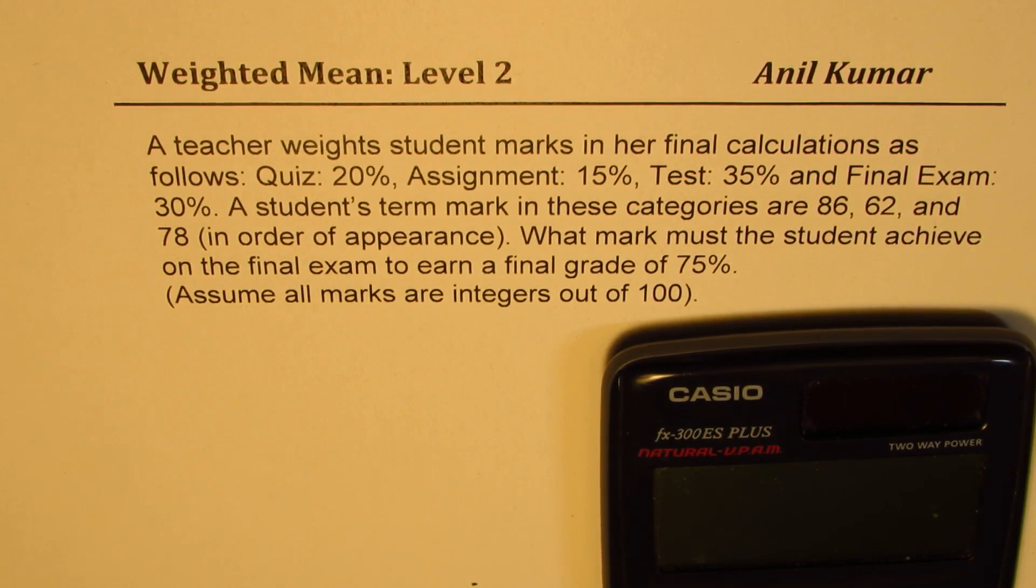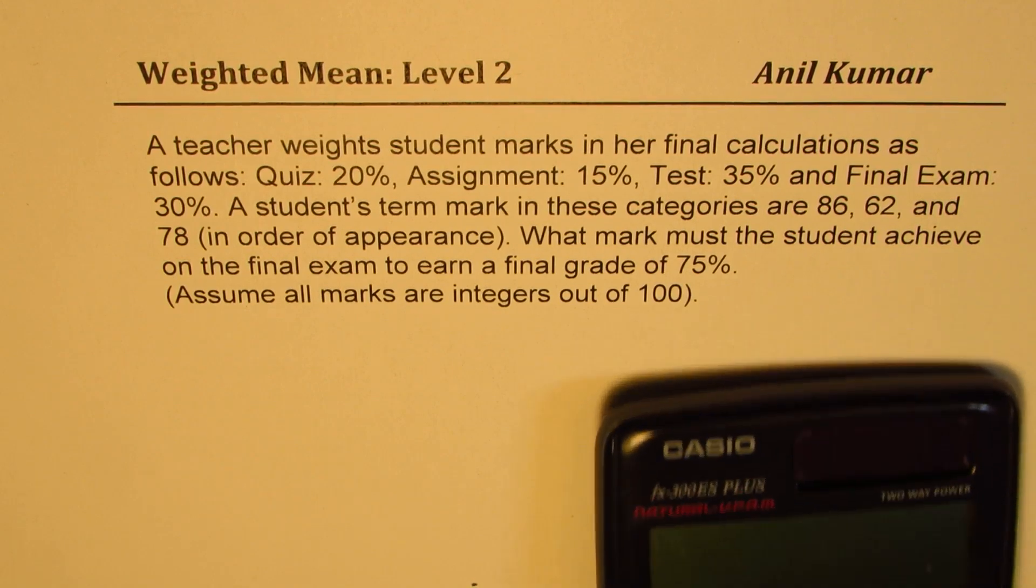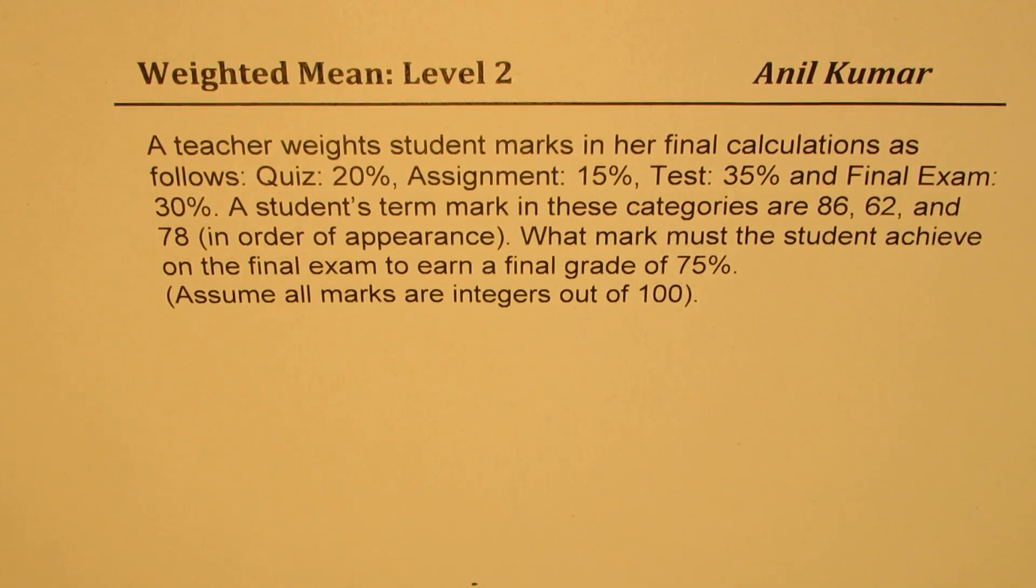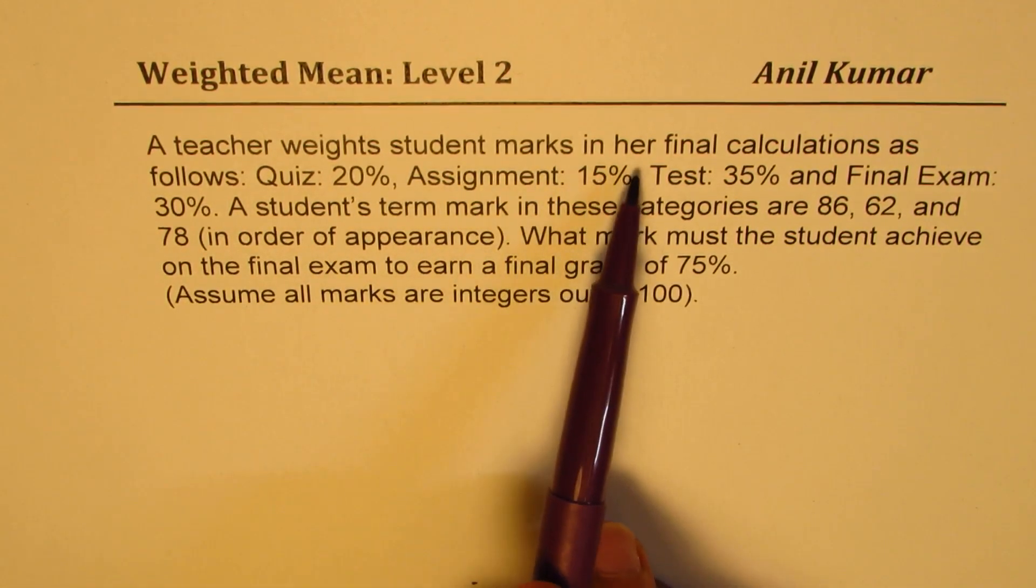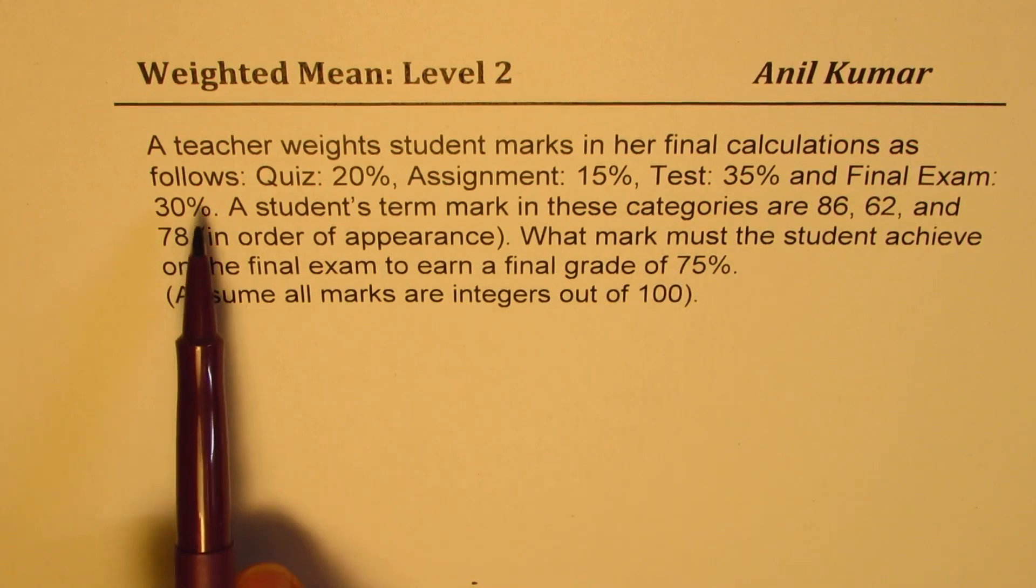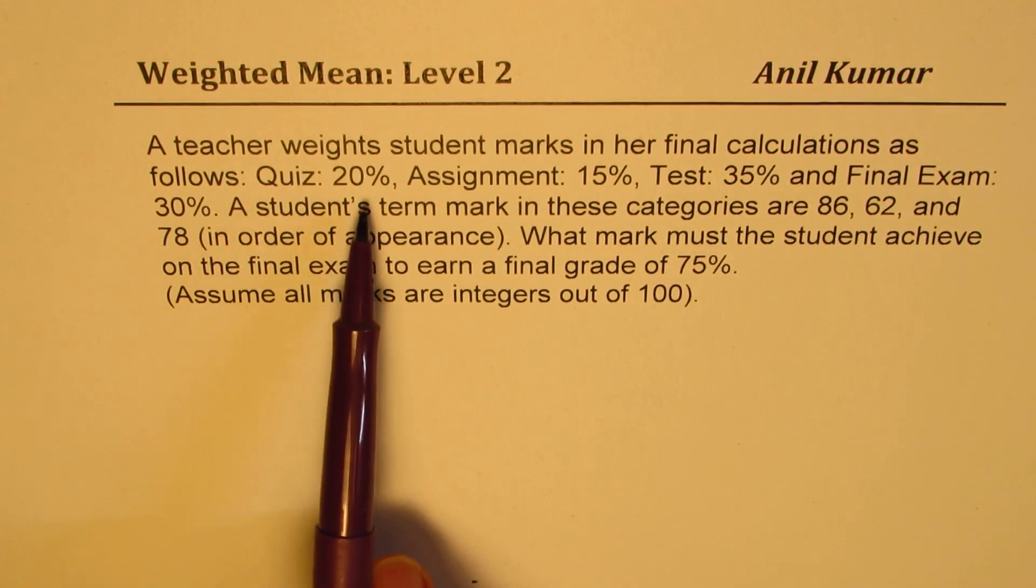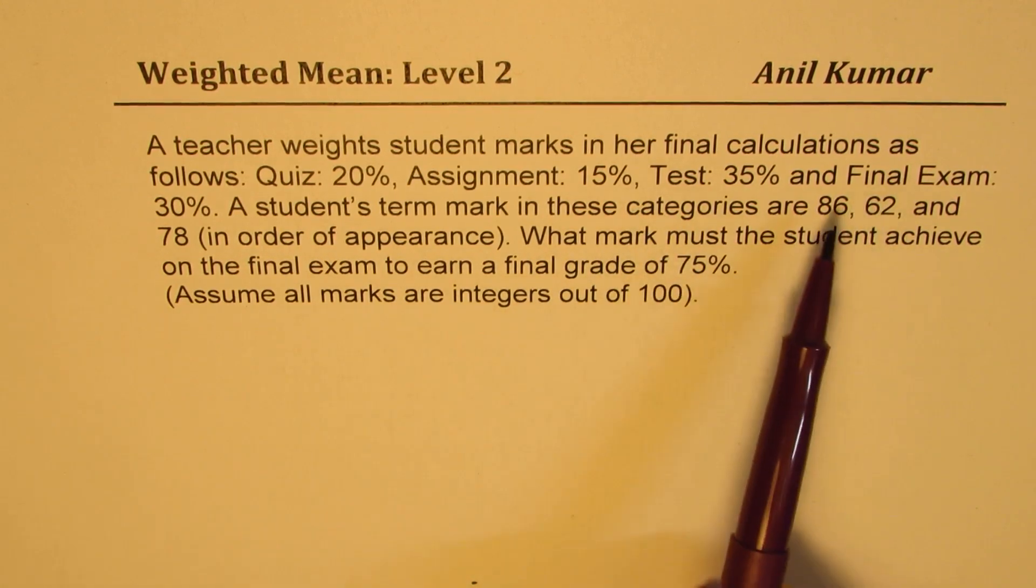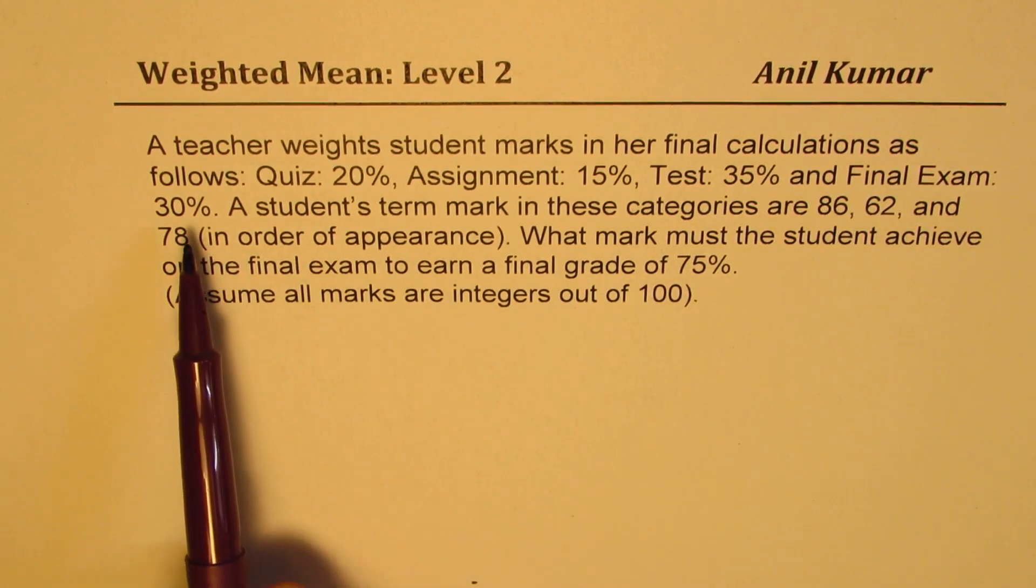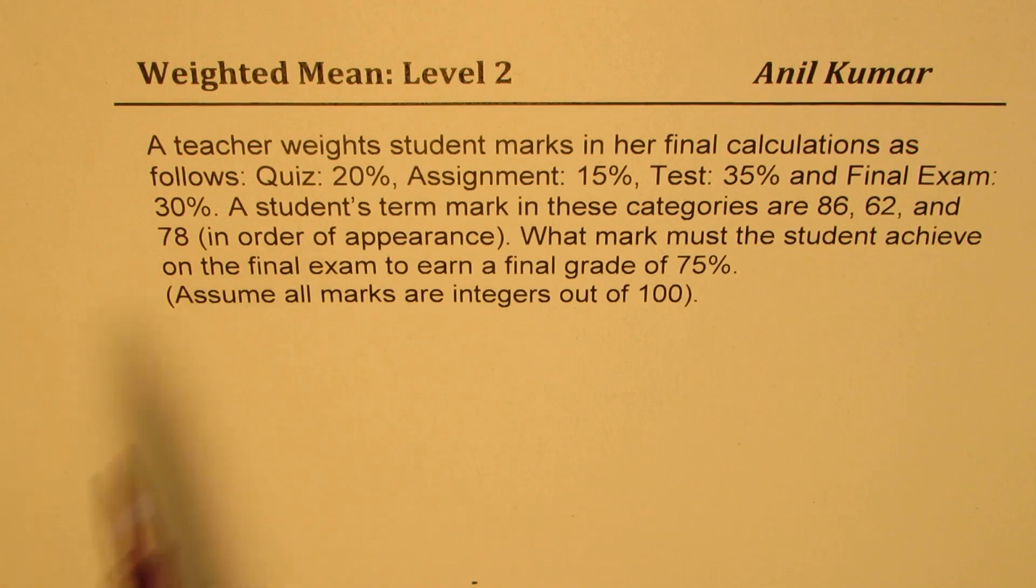Let's look into it. A teacher weighs student marks in her final calculations as follows: Quiz 20%, Assignment 15%, Test 35%, and Final Exam 30%.